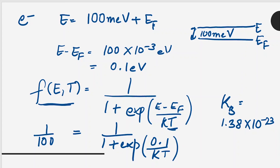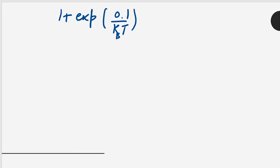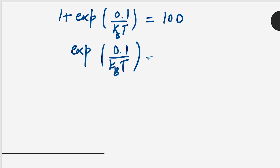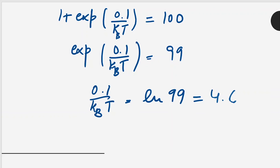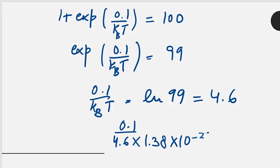So we simply have to put all these values in and do the mathematics. The exponential term e^(0.1 / k_B T) becomes 99, so 0.1 / k_B T = ln(99), which is equal to 4.6. Therefore T = 0.1 / (4.6 × 1.38 × 10^(−23)), which comes out to be 252 Kelvin. So this is our answer.